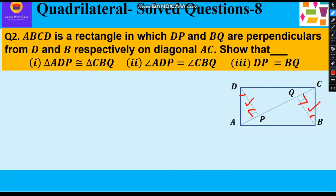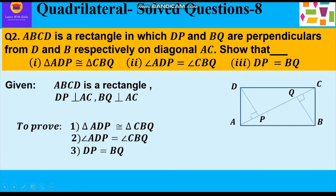This is the question given to us, the rectangle ABCD and DP and BQ are the two perpendiculars on the diagonal AC. We have to prove that triangle ADP is congruent to triangle CBQ and further angle ADP is equal to angle CBQ and side DP is equal to side BQ.